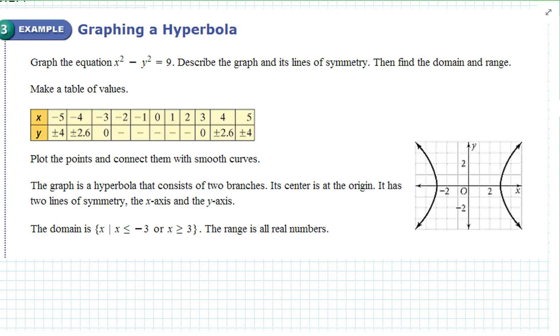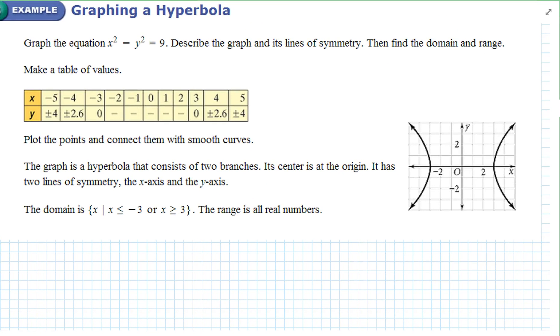Now graphing a hyperbola. Graph the equation x squared minus y squared equals nine. Describe the graph and its lines of symmetry. So again make a value zero and go from there. When x equals negative five, y equals plus or minus four. When x is negative four, y equals plus or minus two point six. When x equals negative three, y equals zero. Now notice y doesn't exist when x has values of negative two to positive two. There are no y values for those.